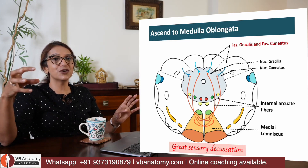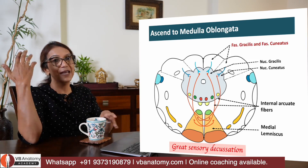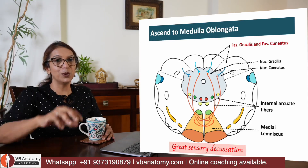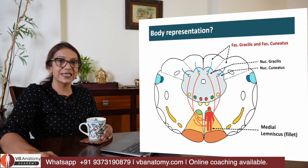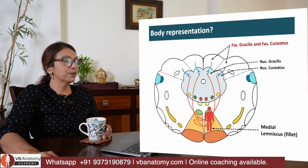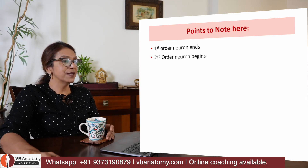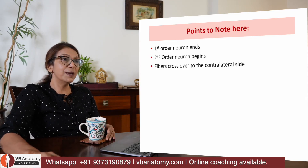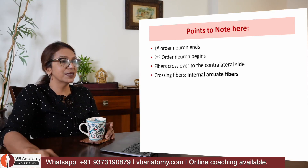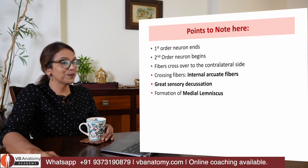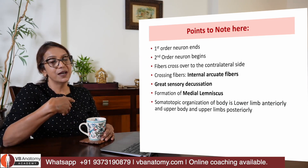So finally, sensation felt on the left hand has crossed over and is now carried upward on the right side of the medulla oblongata through the medial lemniscus. Body representation in the medial lemniscus: lower limb forward, upper body backward. Key points so far: first order neuron ended at lower medulla; second order neuron crossed to the contralateral side via internal arcuate fibers, constituting the great sensory decussation; and a new bundle called medial lemniscus is now formed.